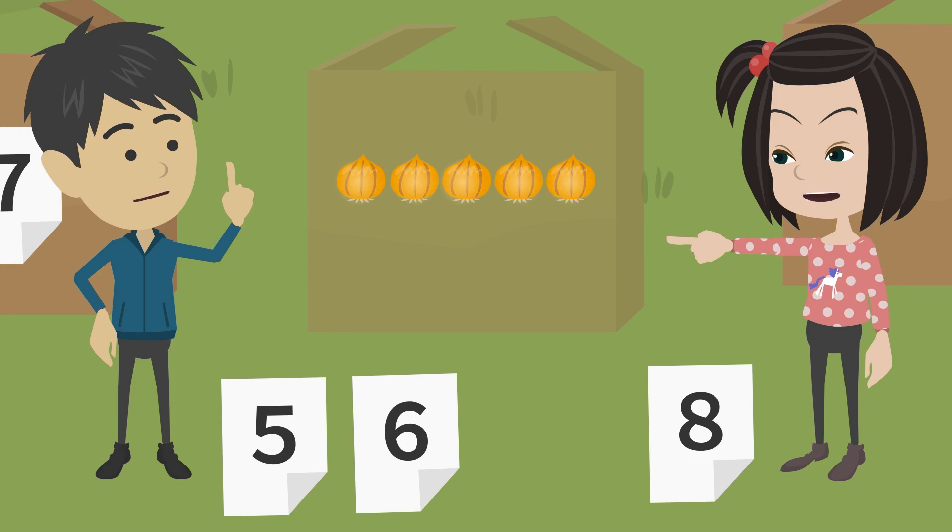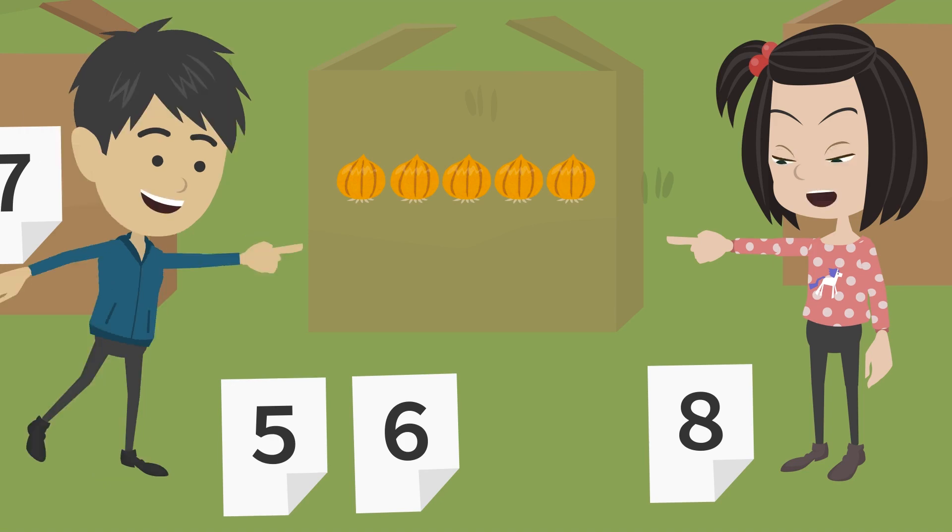1, 2, 3, 4, 5, 7. There are 5 onions in this box. So the label that should be on this box is...